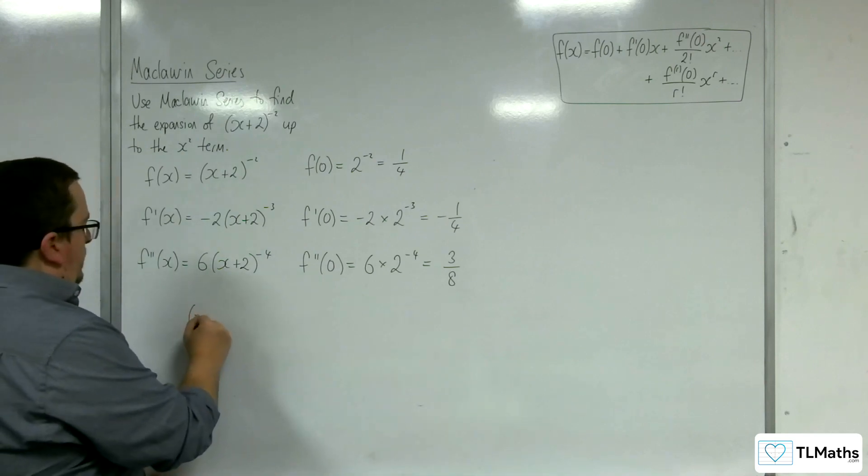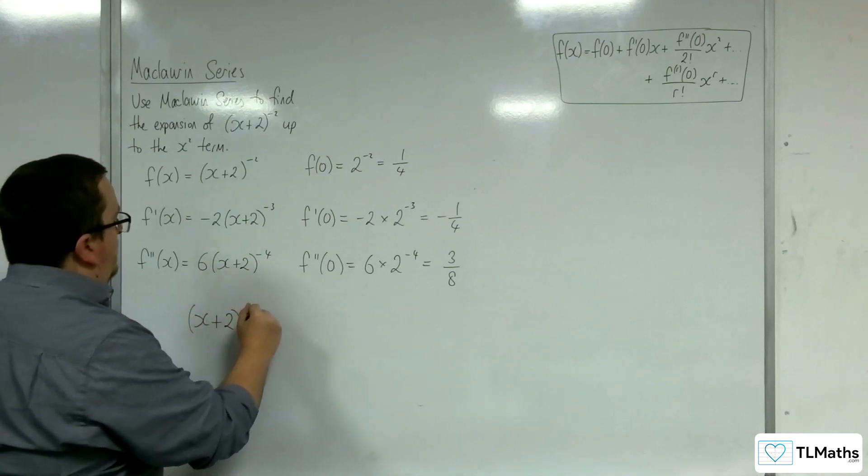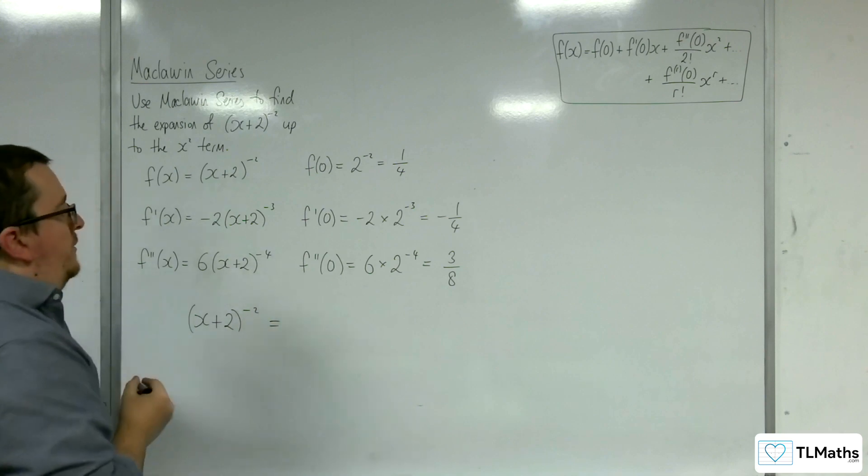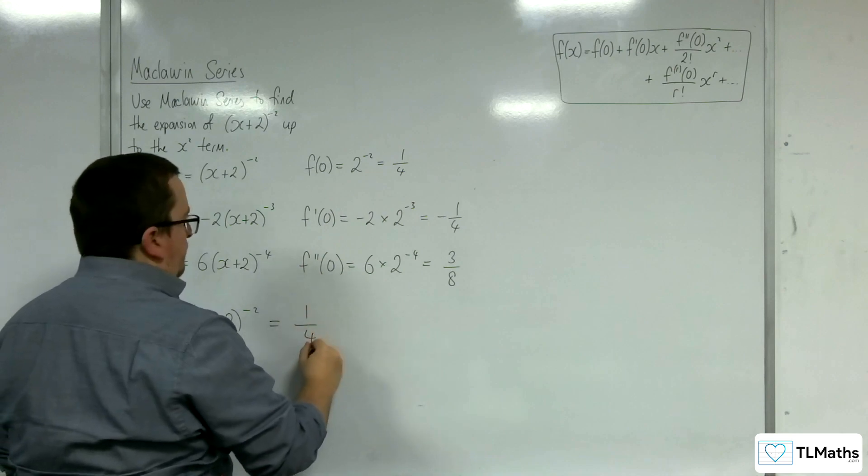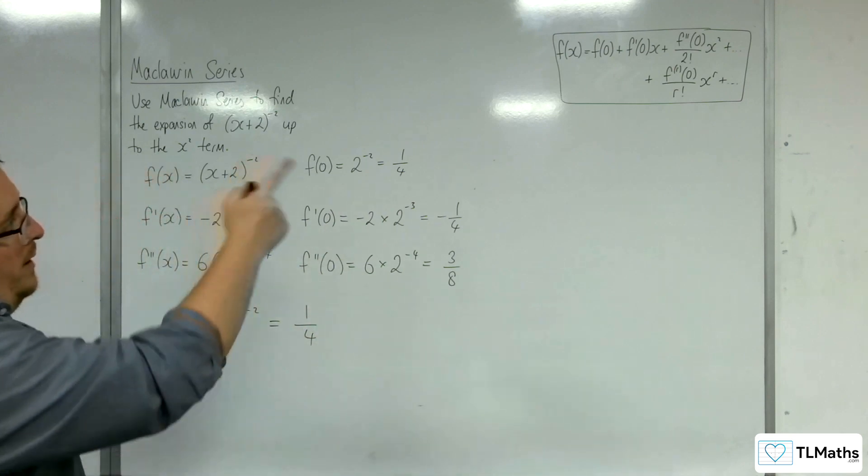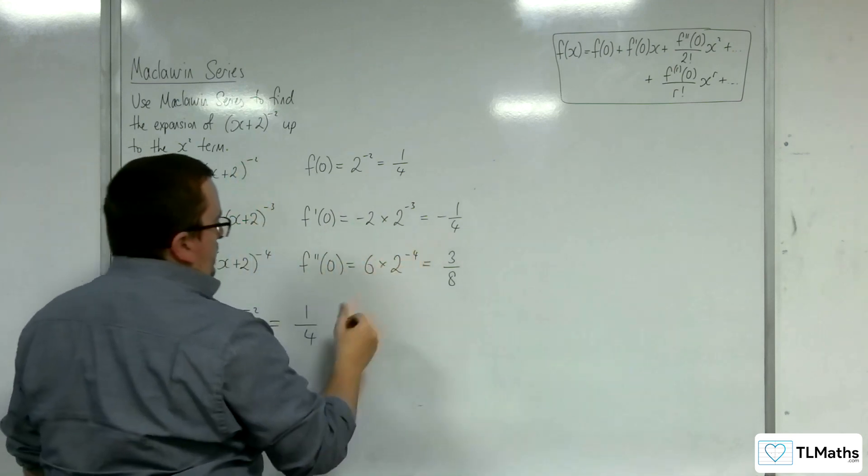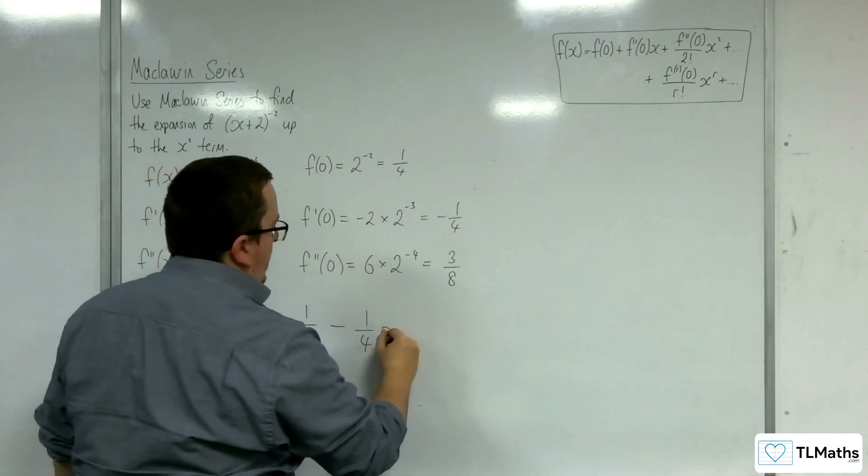So (x+2)^(-2) is going to be equal to, so f(0), so 1/4. Then plus f'(0) times x, so take away 1/4 x.